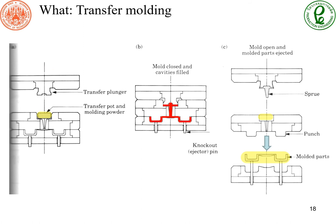If the part we want to make has complex shapes, we may need to extrude the charge into the mold. This is called transfer molding. To do this, we have three layers of mold: the transfer plunger is the top layer, the transfer mold is the middle portion, and the mold cavity itself is the bottom layer. The transfer plunger forces the charge into the transfer mold, and the raw material fills up the bottom mold cavities. This process allows us to create complex parts.